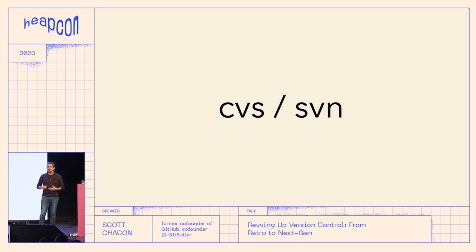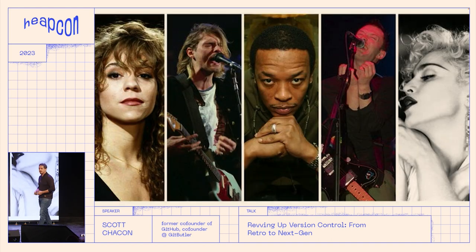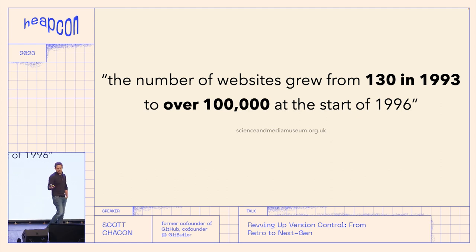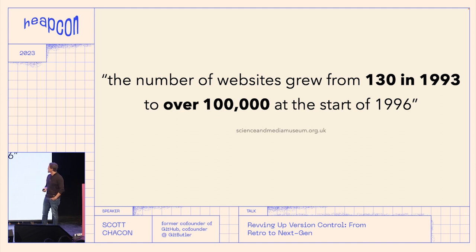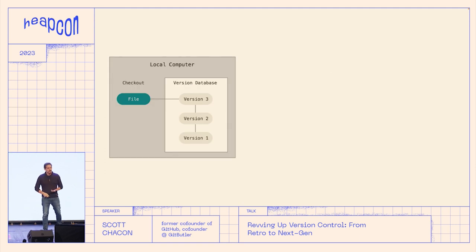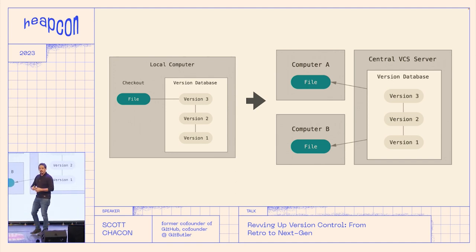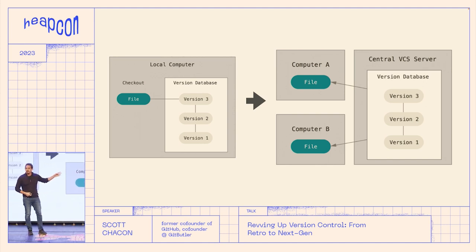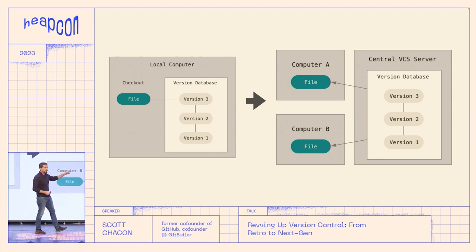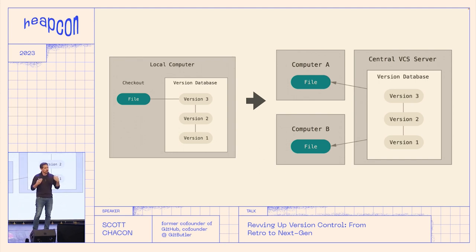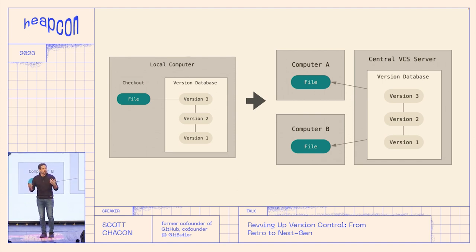After RCS, we had CVS and Subversion. Most of you have probably used at least one of those — this is the 90s. We had servers now, so we could do centralized version control. We moved from having all versions locally to having a version control server, where a commit went straight to the server. An interesting thing about this is that it was a merge-before-commit operation — you had to merge stuff before you could commit. With Git, you commit first and then merge when you want to push.